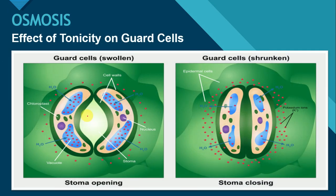Let us see how it affects with the help of this diagram. During day, guard cells mein photosynthesis ka process honne ki wajah se, yahaan glucose ki concentration high hooti hai. Glucose ki concentration ke high honne ki wajah se, surrounding epidermal cells se water molecules inside the guard cells move kerti hai. Water molecules ke inside the guard cell move karne se, guard cells swell ho jate hain and it will appear like a bow shape. And in the center, there will appear a pore, that is called the open stomata.